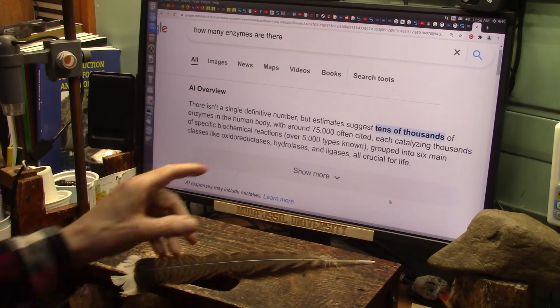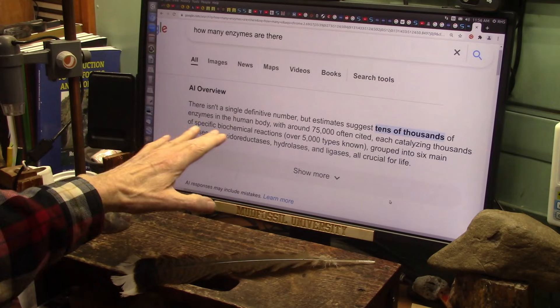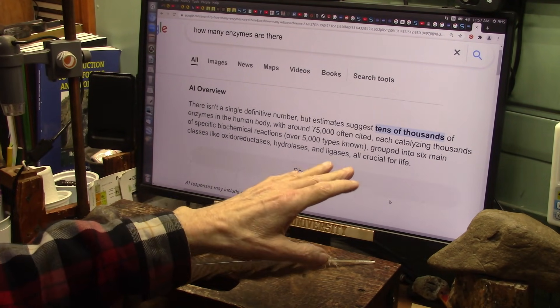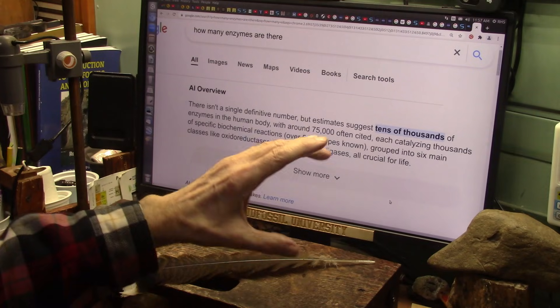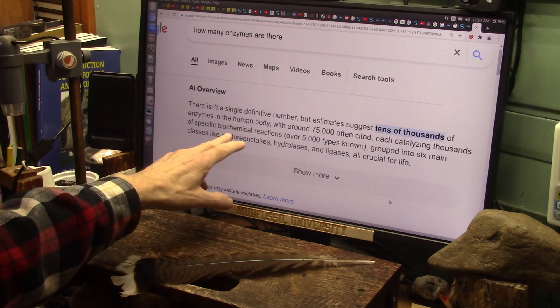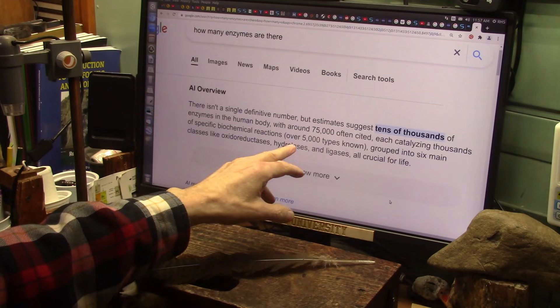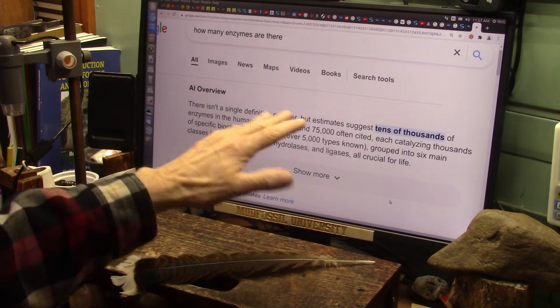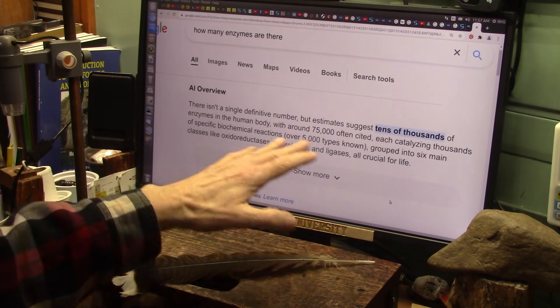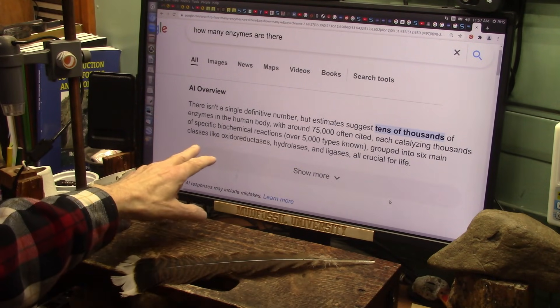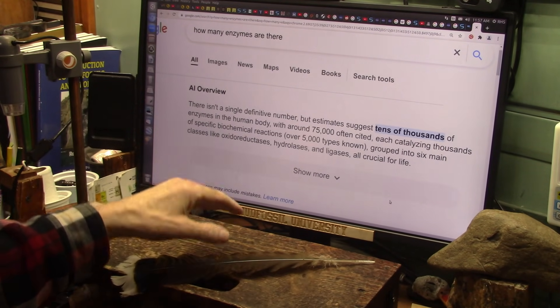They're saying there's tens of thousands of enzymes in the human body, around 75,000 they claim. And each one catalyzes thousands of specific biochemical reactions per second. Over 5,000 types of reactions that they actually know about, but I'm telling you, there's many more than that. They're grouped into six main classes.